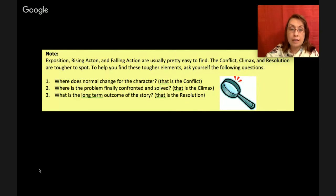All right, go ahead and turn your worksheet over, and let's talk about just a couple of things that students tend to struggle with. Oftentimes, students can tell me the exposition of the story. If I ask them who's the main character, they can tell me, and where is it taking place, they can tell me. Rising action, falling action, they usually can find those, but it's that inciting incident, climax, and resolution that are tougher to spot. So to help you find these tougher elements, I have three questions that you should ask yourself every time you are looking for these things. Number one, where does normal change for the character? That's the conflict. That's the inciting incident. Number two, where is the problem finally confronted and solved? That's the climax. And number three, what is the long-term outcome of the story? That's the resolution. What did the characters learn about life? That's your resolution.